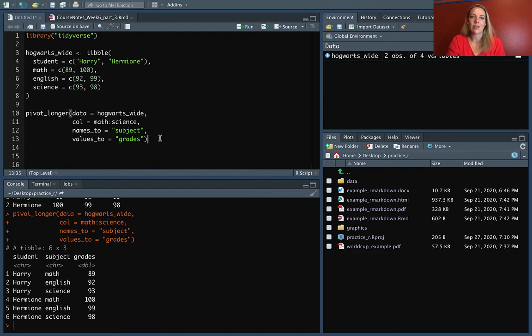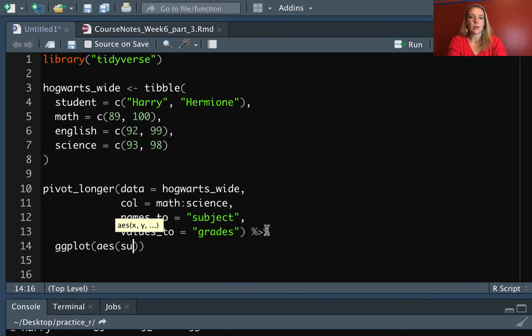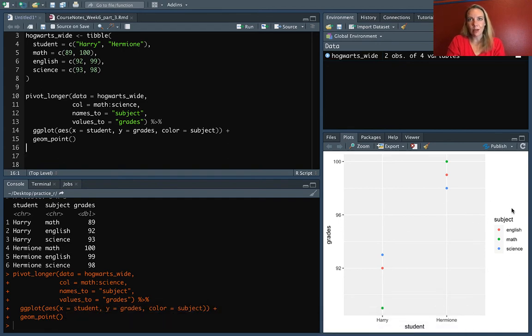Now that we have it in this format, there's some things we can do really easily. For example, we could go right into ggplot, and we could do student on the x aesthetic and then the grades. But now that we have subject down here, we could do the color as subject. And then we could do points if we wanted to for a really simple plot. So you can see now that we're able to use that information that was stored in the column names before. It was really hard to get to and use when it was up in that other format, but by pivoting longer and putting it in its own column, we can work with it in the same ways that we've been doing stuff up to this point.